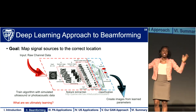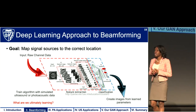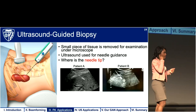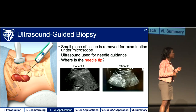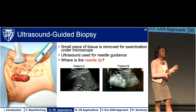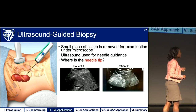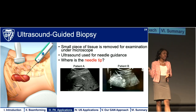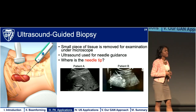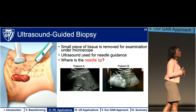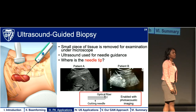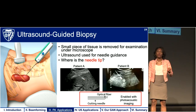It remains an open question as to what the networks are interpreting when applied to ultrasound imaging. In the clinical example of ultrasound-guided biopsy, where a small tissue sample is removed for examination and ultrasound guides the needle to the target, one question is where is our needle tip? In some patients it's very clear to see where the needle tip is located, and in others not so much — even though the same equipment and beamforming methods are being implemented. It would be very useful to know with confidence for all patients exactly where that needle tip is located.